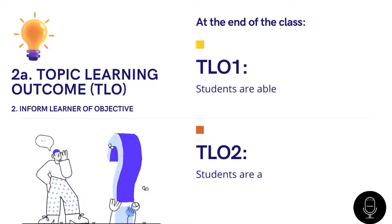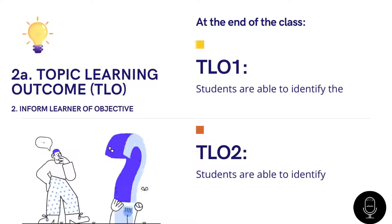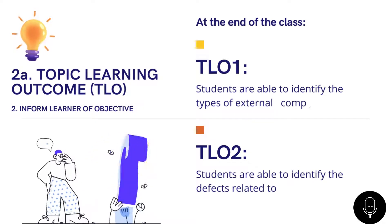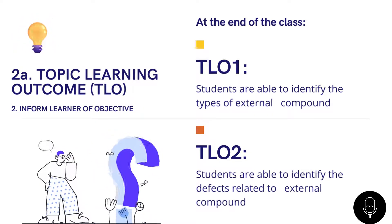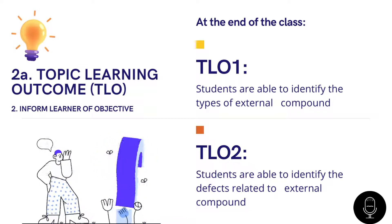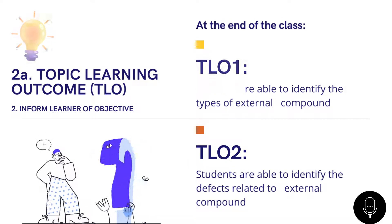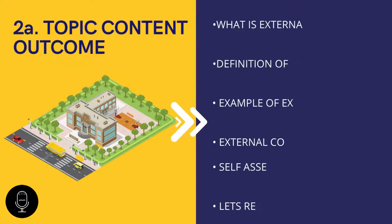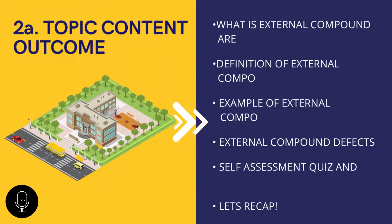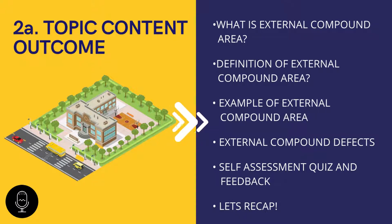Before we start our journey, let's take a look at our learning outcome and learning outline. The objective of this module is to identify the types of building external compound and the defects related to building external compound. This outline includes the overview of external compound area, the definition and example of external compound area. Besides that, we will also learn and understand the types of external compound defects.